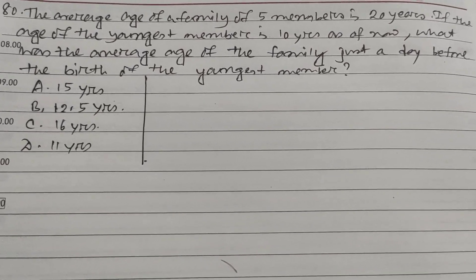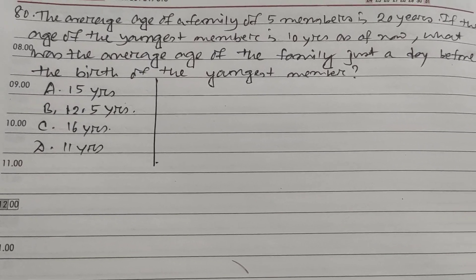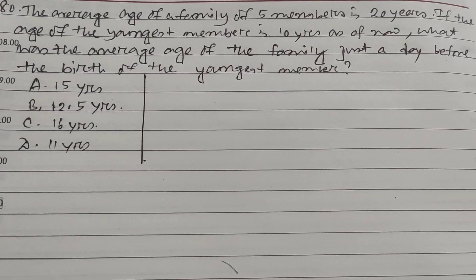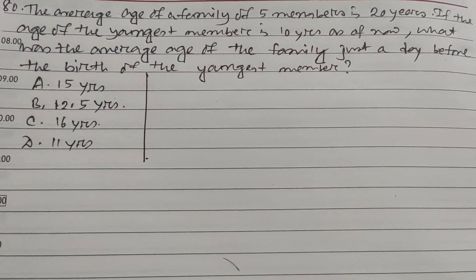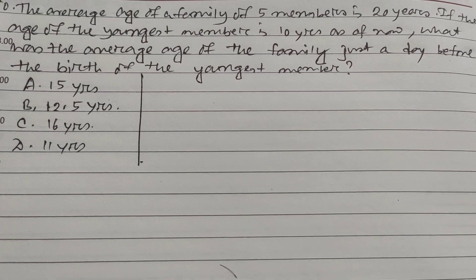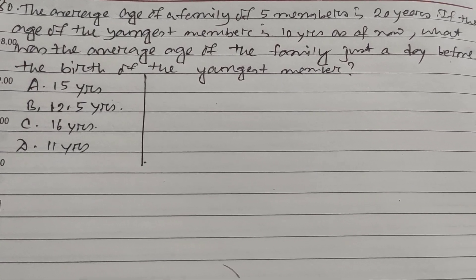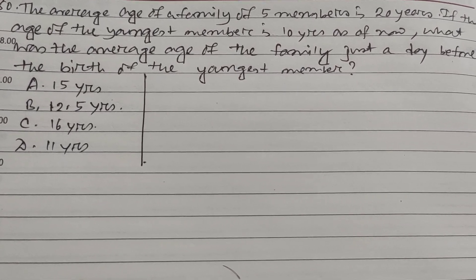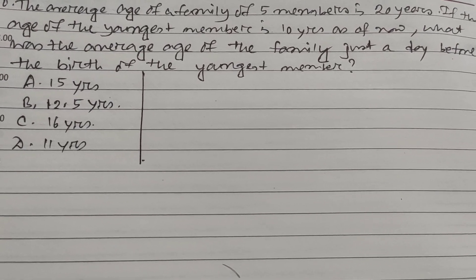Hi friends and students, this is question number 80. The average age of a family of five members is 20 years. If the age of the youngest member is 10 years as of now, what was the average age of the family just a day before the birth of the youngest member?